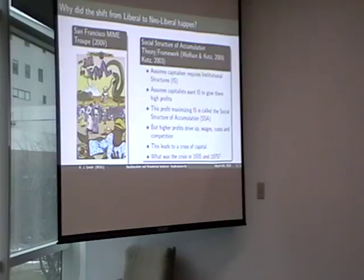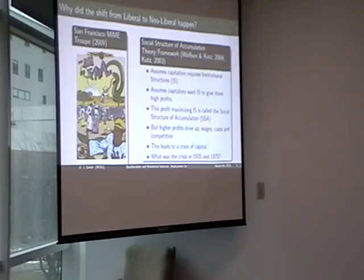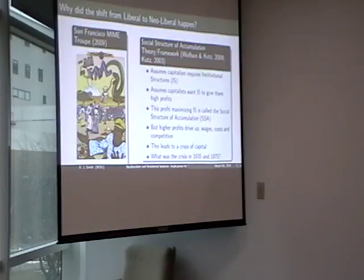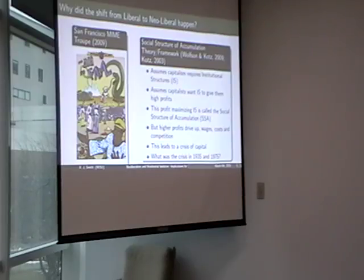Higher profits drive up wages, costs, and competition, and this leads to what's called a crisis of capital. What was the crisis of capital in 1935? There was a huge stock market crash in 1929, and the ripple effects triggered the New Deal. Likewise, around 1967 there was a large stock market crash, and the ripple effects — including the oil crisis and stagflation — triggered a crisis of capital that led to broad changes in institutional structures. That was why we had these shifts in social policy: ways to make it easier for the investor class to have more profits.